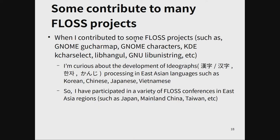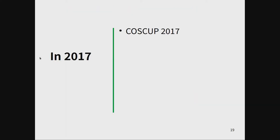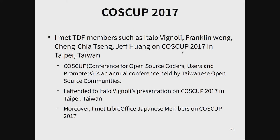When I contributed to free/libre open source software such as GNOME Characters, KDE Character Select, and lib-hangul, I became curious about the development of ideographs — Chinese Hanzi, Korean Hanja, and Japanese Kanji processing in East Asian languages. So I participated in a variety of free/libre open source software conferences in East Asian regions. In 2017, I attended COSCUP 2017, the conference for open source coders, users, and promoters — an annual conference held by Taiwan's open source communities.